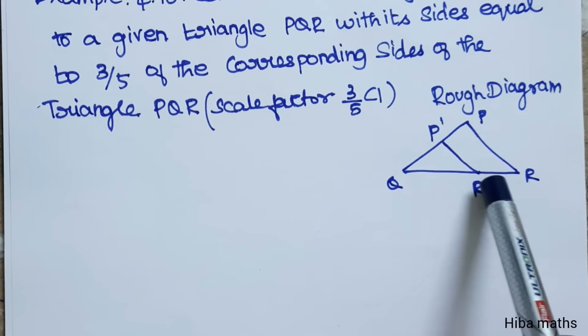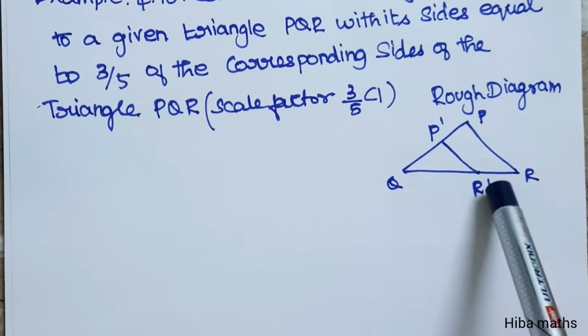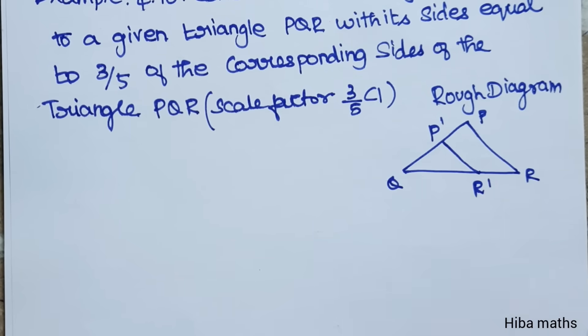So we identify points P' and R'. Let's start the construction. First, let's take a triangle — it doesn't need specific measurements at this stage.